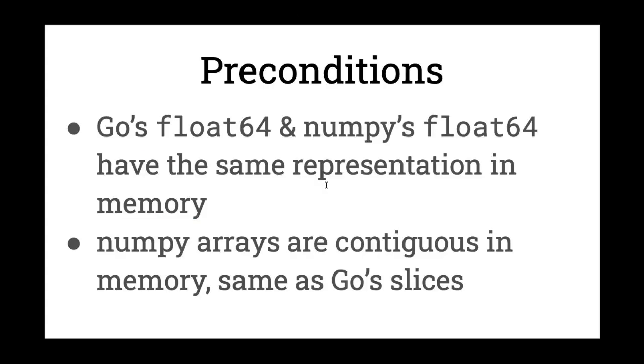To avoid serialization, we're going to look at some preconditions that help us. We have code that uses NumPy to do outlier detection. What is going to help us is that both the Go float64 and NumPy's float64 have the same memory representation. The second thing is that both NumPy arrays and Go slices are continuous in memory. We don't have gaps. So we can pass them around using the same underlying memory representation.